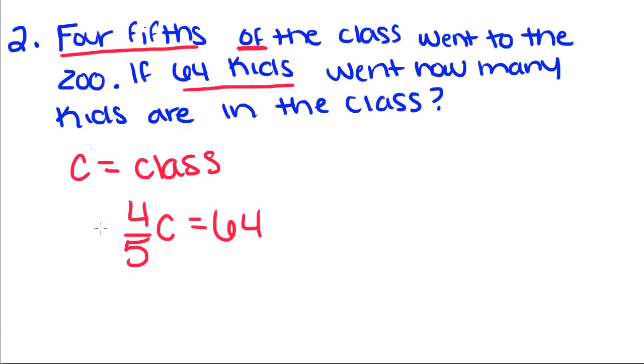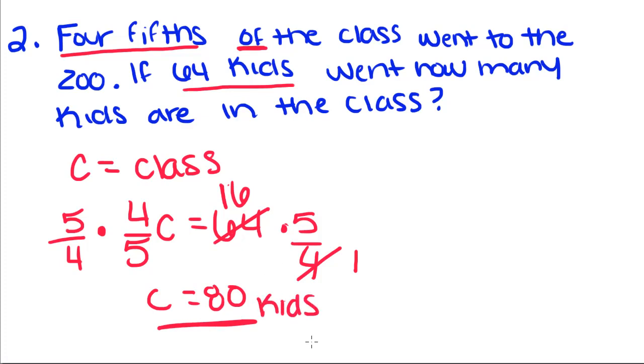So now we're going to multiply both sides by 5/4. This is going to get C by itself. We can reduce by 4s - this becomes 1, and this becomes 16. And 16 times 5 is equal to 80. So if you set it up this way and make sure you put units, that means 80 kids.